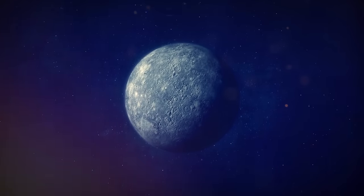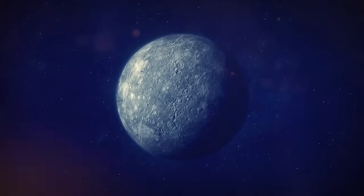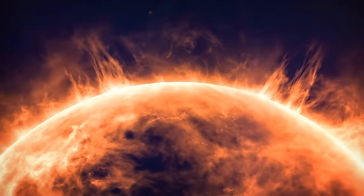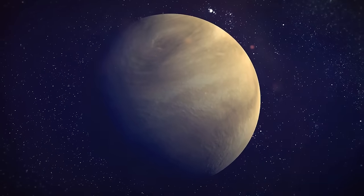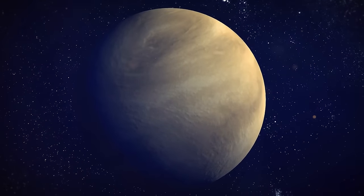Mercury doesn't have its own moons because of its small size and weak gravity. Plus, the planet is too close to the Sun. By the way, the only other planet without moons in our solar system is Venus.